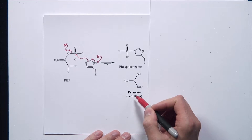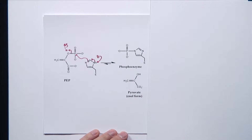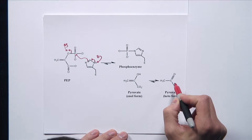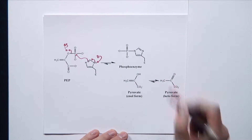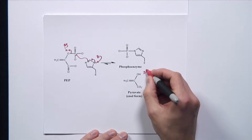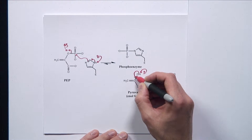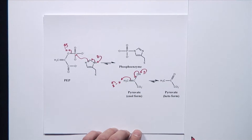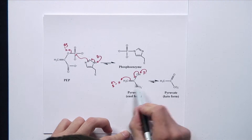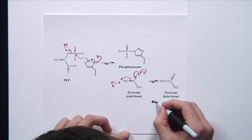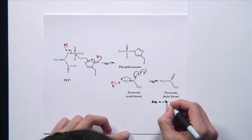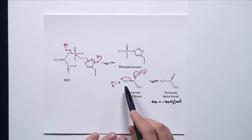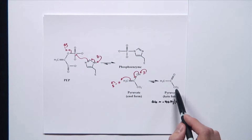However, notice the enol form of pyruvate — this is a very unstable product. It likes to tautomerize, basically isomerize under acid-base conditions, to the keto form of pyruvate. A base can deprotonate the enol, and then a general acid can protonate the CH2 group to generate the keto form. The delta G for this transformation is approximately minus 40 kilojoules per mole, so this reaction strongly favors the keto form.